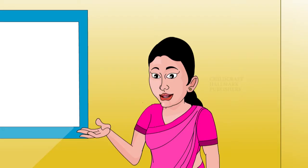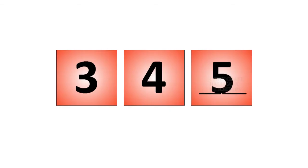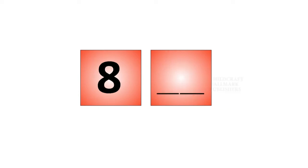Study the number line and fill in the correct numbers. What comes after three and four? Five. What comes after eight? Nine.